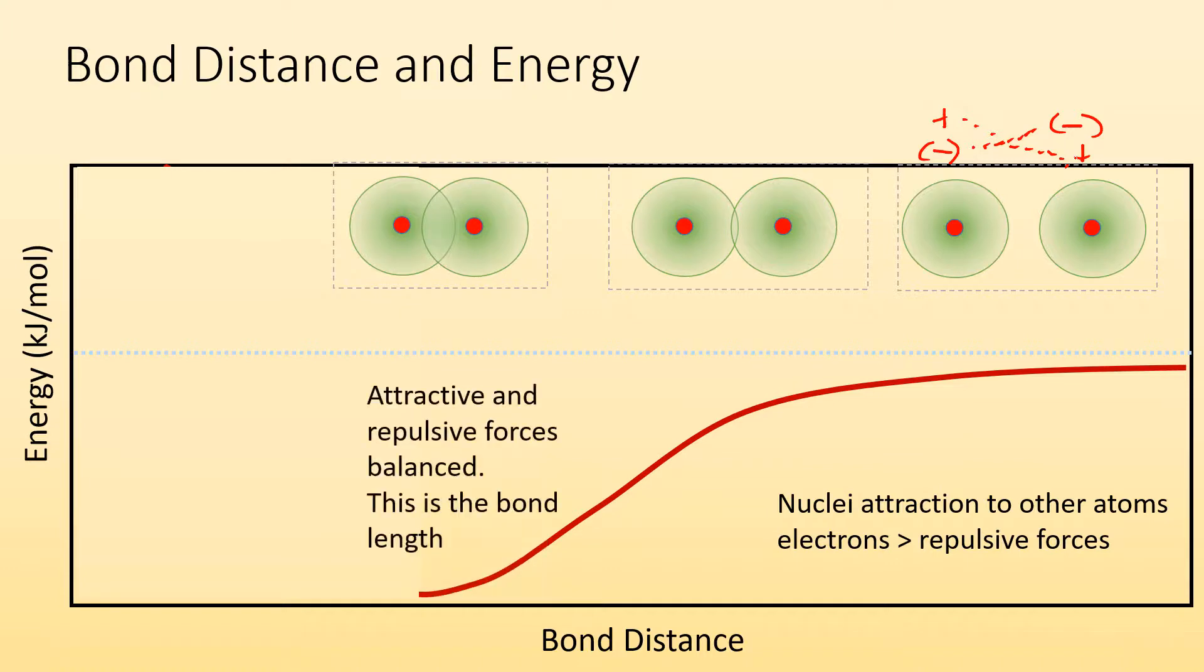And we're going to find this minimum distance where the attractive and repulsive forces are balanced. So there's going to be this equilibrium where the positive nucleus is being attracted to the other atom's electrons, but equally repelled from the other one's nucleus. So there's this kind of equilibrium found.